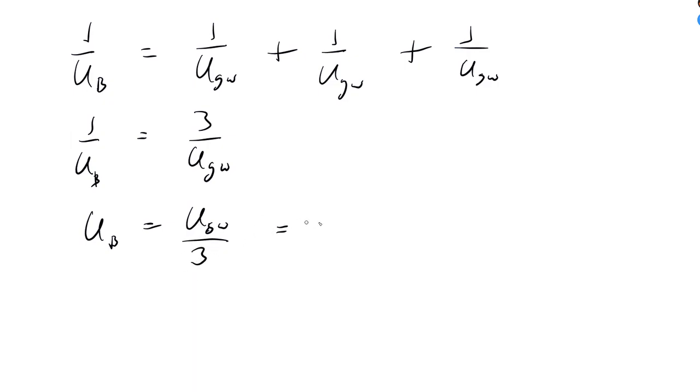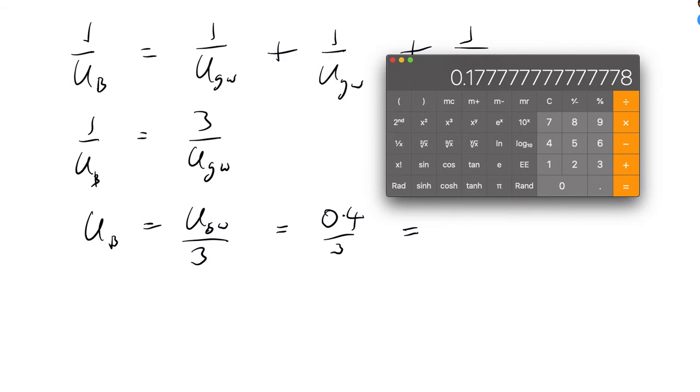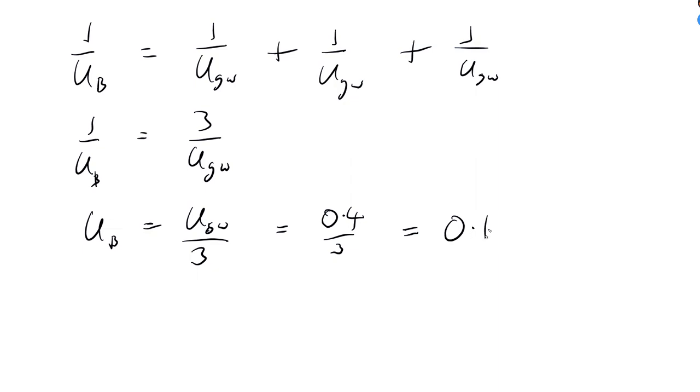U_GW is 0.4, 0.4 divided by 3. So 0.4 divided by 3 is another job for the calculator. So 0.133. Again, that's watts per meter squared Kelvin.